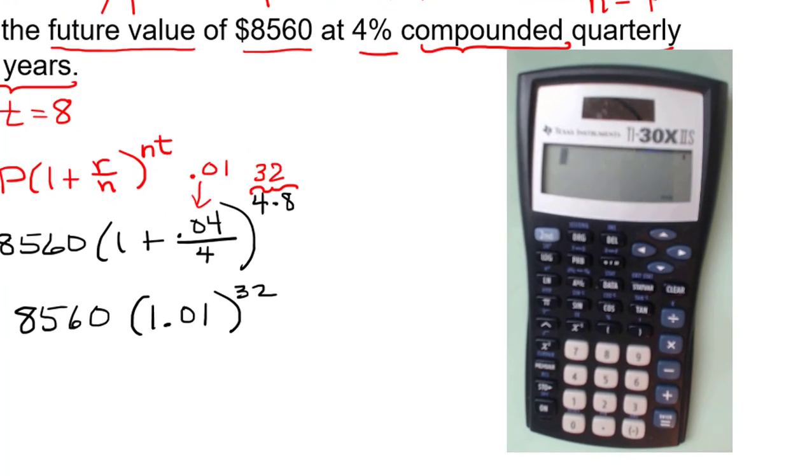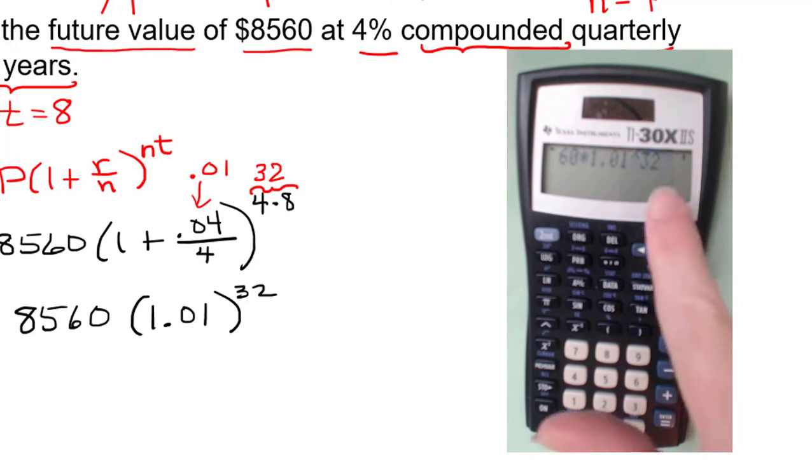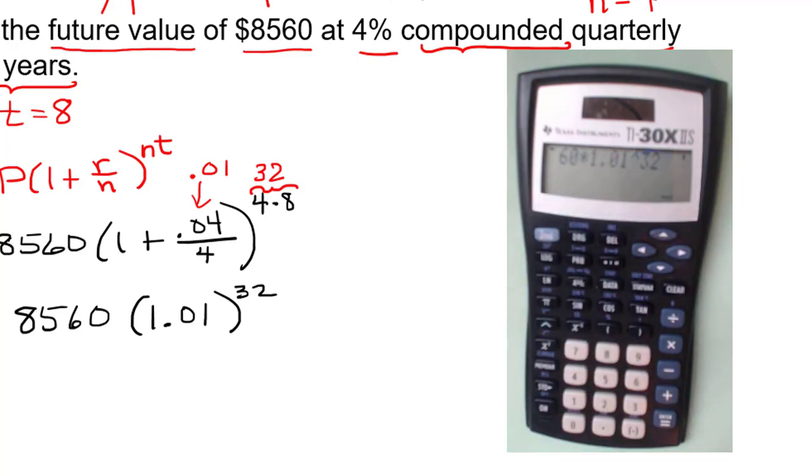So let's try entering this into our calculator. We're going to put in 8,560 times. And in this calculator, in order to raise a number to a power, we use the exponent button that looks like a little carat symbol, an arrow pointing upward. So you type in the base, which in this case is 1.01, raised to the power of 32. Now the calculator does know, this is the TI-30X2S, most Texas Instruments work the same way, that the exponent comes before the multiplication. So you don't have to worry about that. So the order of operations will be correct. And I'm going to put equals. And so we see the total value is $11,769.49.